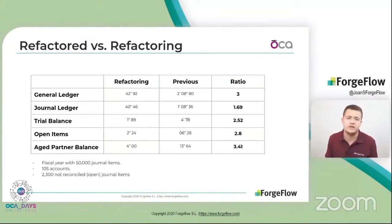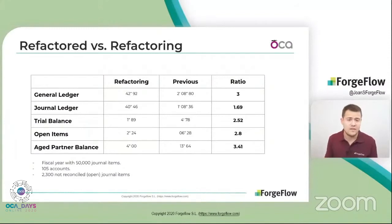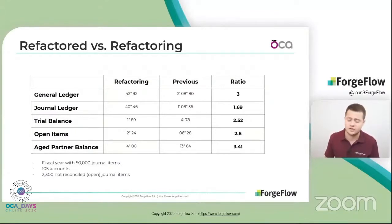So it has been reduced by a factor of three in the first case and 1.7 for the journal ledger. For the other reports the ratio is around 3x. After analyzing these results, I think we can conclude that we have achieved our goal of reducing computation time, and we have also eliminated errors associated with vacuuming of the transient records.